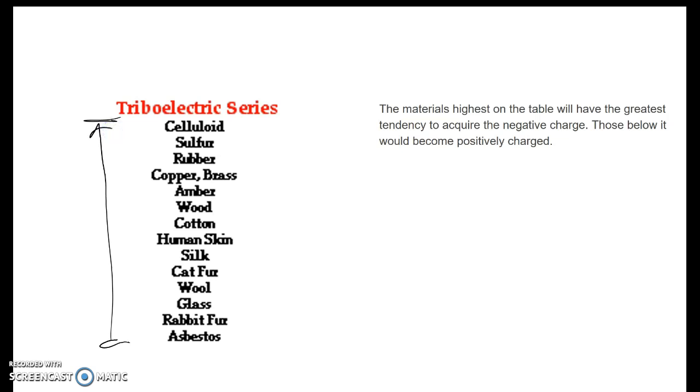What this means is if we take two objects on this list and rub them together, the object that's higher on the list will become negative and will take the electrons. The item that's lower on the list will become less negative or become positive, so the electrons will jump from one to the other.